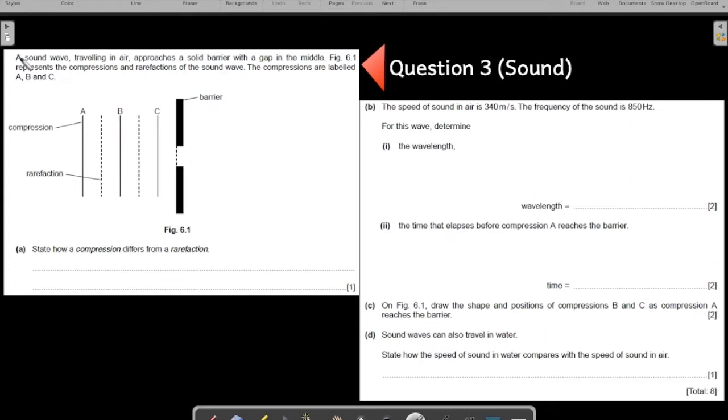Alright, so let us understand what is happening in question number three. A sound wave traveling in air approaches a solid barrier with a gap in the middle. So there is a gap, there is a barrier. You should automatically understand that there is a wave also present, so diffraction is taking place, definitely.